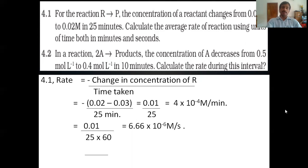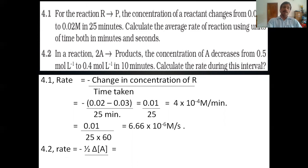Second problem: In the reaction 2A gives product, concentration of A decreases from 0.5 mol/L to 0.4 mol/L in 10 minutes. Calculate the rate during this interval. The rate of reaction equals minus 1/2 into delta[A]/delta t. Substitute the values as in the previous problem and calculate. I think we can stop here and continue in another class.